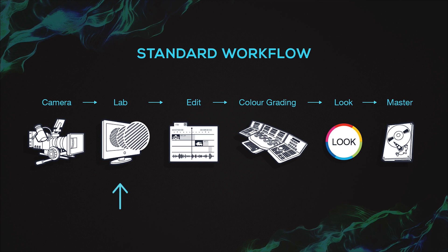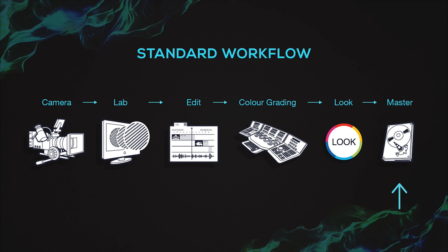That material would get exported into a lab with whatever setting we had in the camera, then it would get edited, and very often the editor and director would get used to this look together. Then that would come to grading, and only then in the color grading suite at the end of the process would we start applying and creating a look for the production. Then we would create a master — usually only one master.